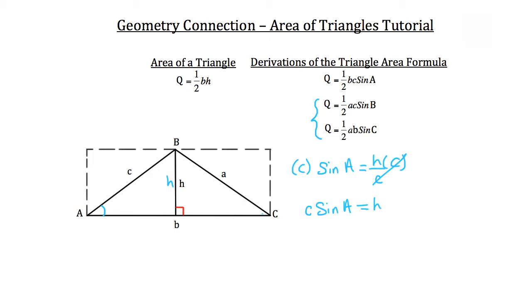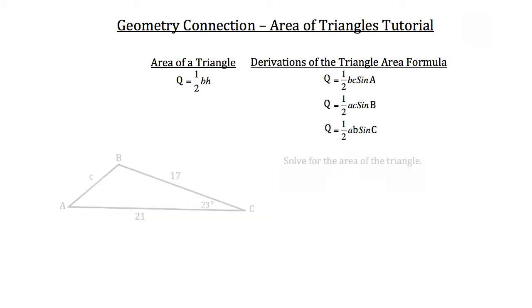So coming from either vertex A or vertex C. Now let's take this derivation of the triangle area formula and solve a practice problem. What I'd like you to do is solve for the area of triangle ABC on the left.